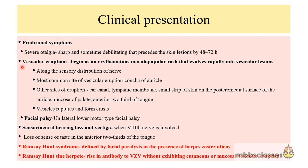Since the geniculate ganglia is involved, vesicular eruptions are seen along the sensory distribution of the facial nerve. The most common site of vesicular eruption is the concha of the auricle. Other areas include the ear canal, outer surface of the tympanic membrane, a strip of skin on the posterior medial surface of the auricle, and the mucosa of the palate and anterior two-thirds of the tongue. Later, these vesicles rupture and form crusts. When examining patients, we must examine both the ear and the oral cavity so as not to miss the vesicles.